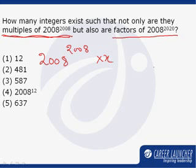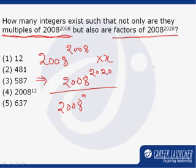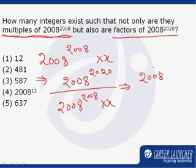But at the same time this number is a factor of 2008 raised to power 2020, so we can say 2008 raised to power 2020 must be divisible by 2008 raised to power 2008 into x. This implies 2008 raised to power 2012 must be divisible by x.